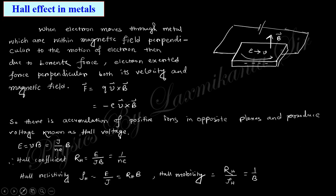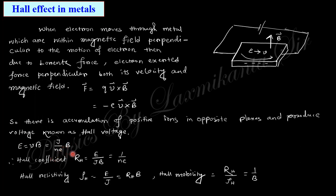Hall effect in metal is an important topic. Due to the Lorentz force, when current flows and a magnetic field is applied perpendicularly, a force acts perpendicular to both E and B, causing electrons to accumulate on one side — creating a charge separation and a Hall voltage. The Hall coefficient R_H equals E_y over j_x B, which equals 1 over n. The Hall resistivity is E over j, and comparing with j equals sigma E gives the complete Hall relation.